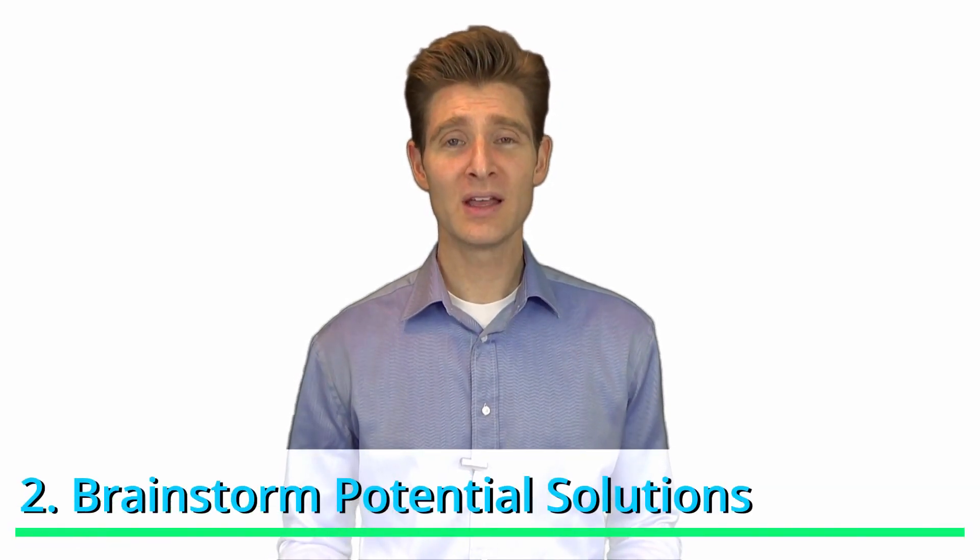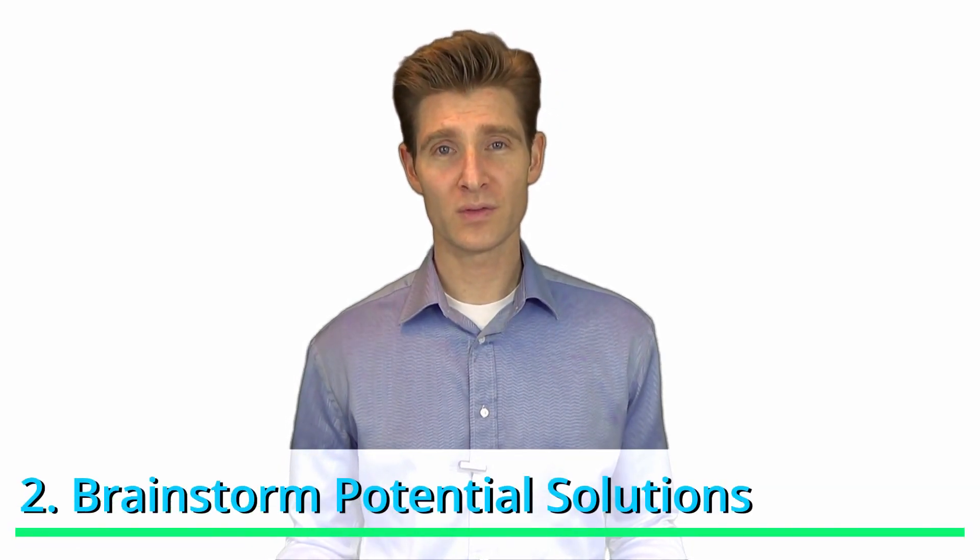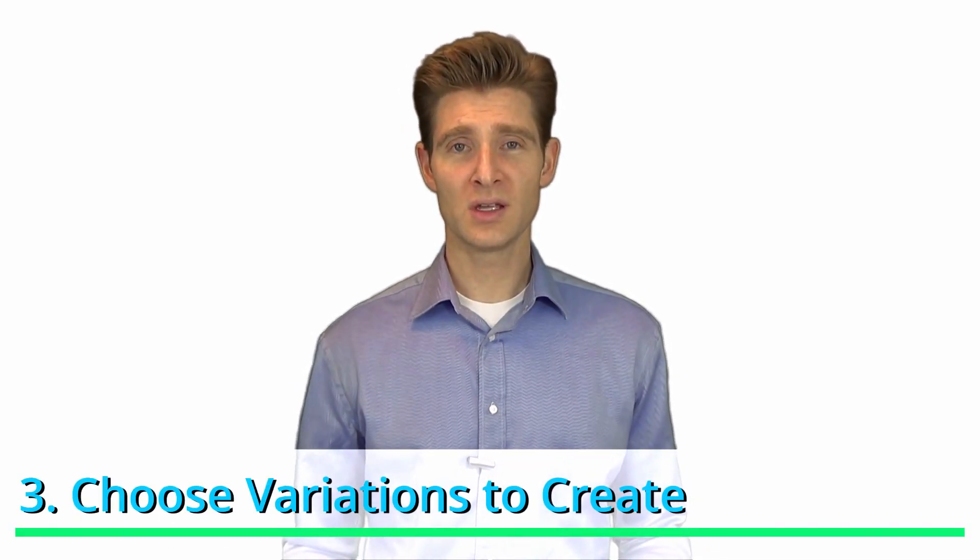Once you have identified your business question that you want to solve, you then go to the second step of brainstorming the things that will work for, or that will answer that problem or question. Once you have solutions to the question that you're trying to answer, the next step is to then identify variations that will answer that question, because you might have three or four different ways of answering the question and solving for that problem.